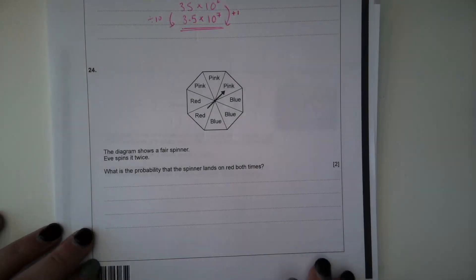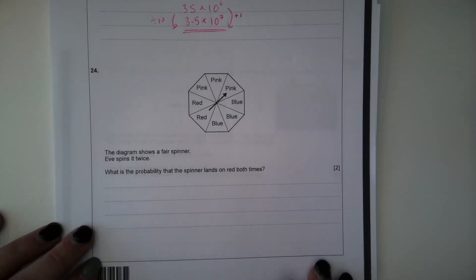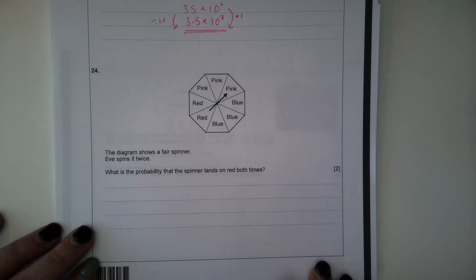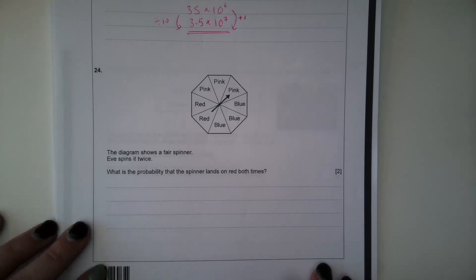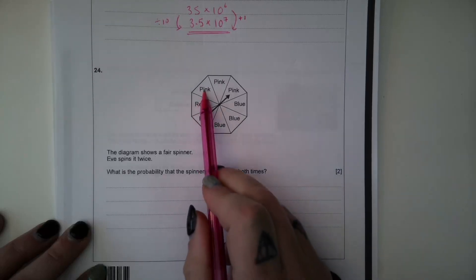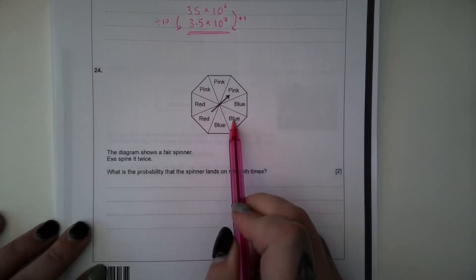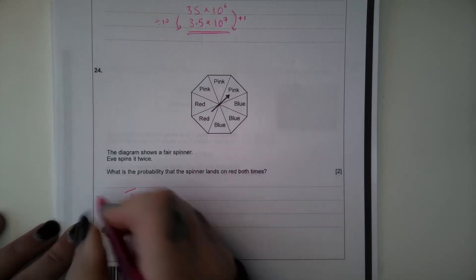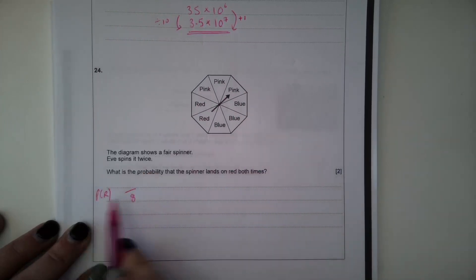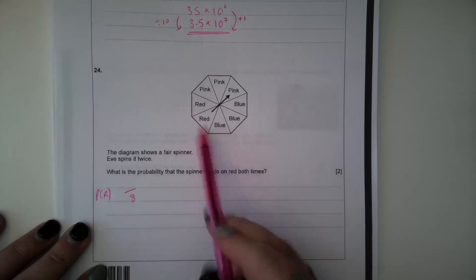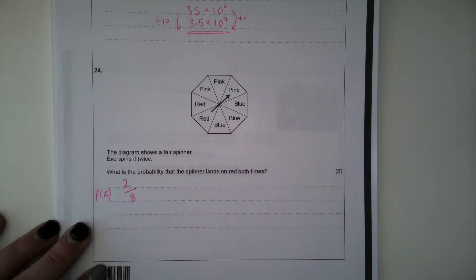Question 24. The diagram shows a fair spinner. Eve spins it twice. What is the probability that the spinner lands on red both times? So we have 1, 2, 3, 4, 5, 6, 7, 8 sections on the spinner. And the probability that it lands on red is 1, 2 out of 8.